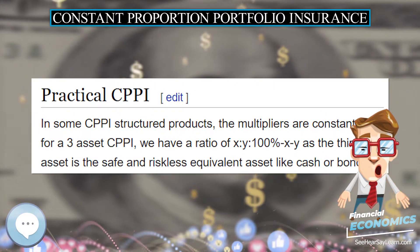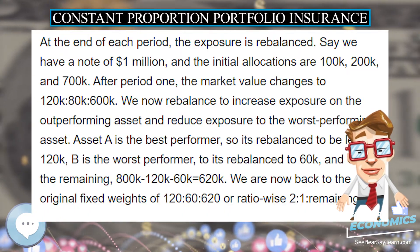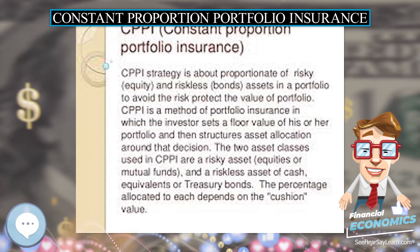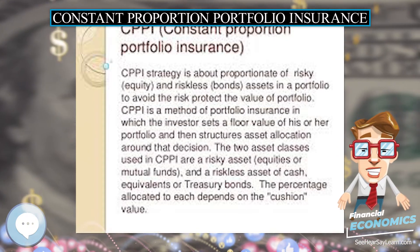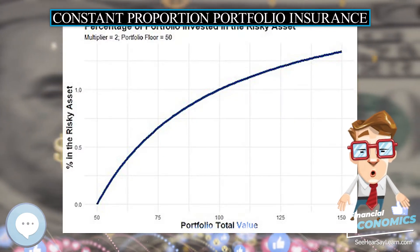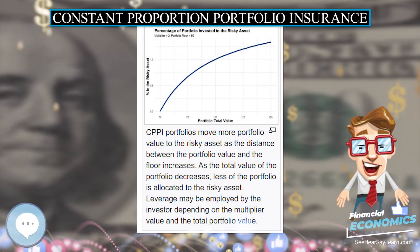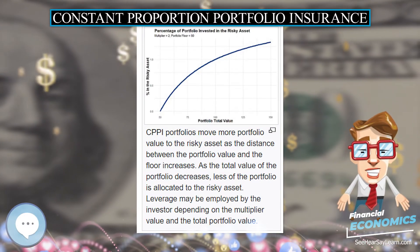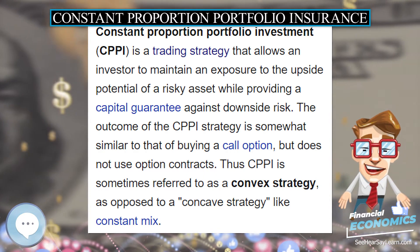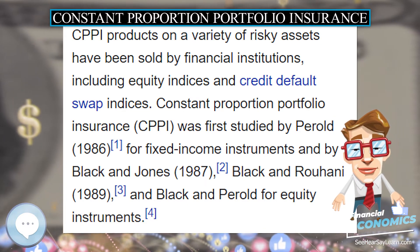The allocation to the risky asset may vary during the life of the product. In case the active asset performance is negative, the values of the active asset and the CPPI strategy will decrease, and as a result the allocation of the strategy to the active asset will decrease. Should the exposure to the risky asset drop to zero or a very low level, then the CPPI is said to be deleveraged or cashed out, and the strategy will be fully allocated to the low-risk asset until the product matures.